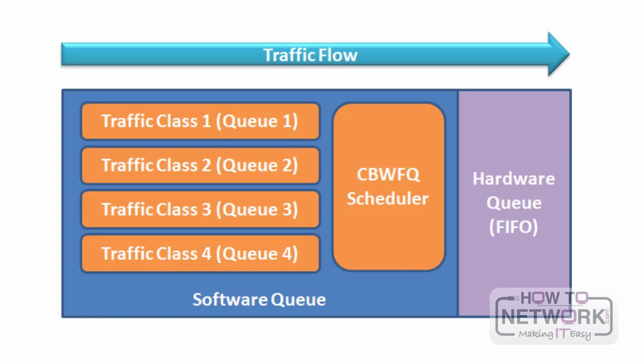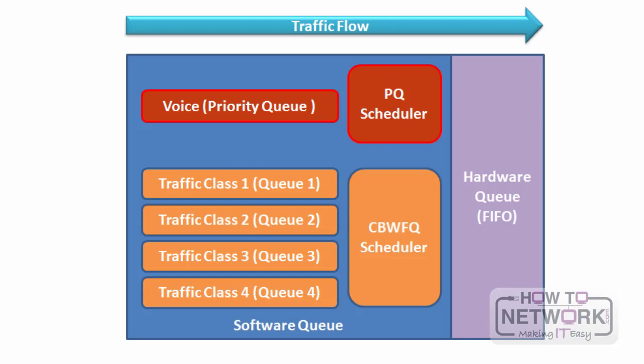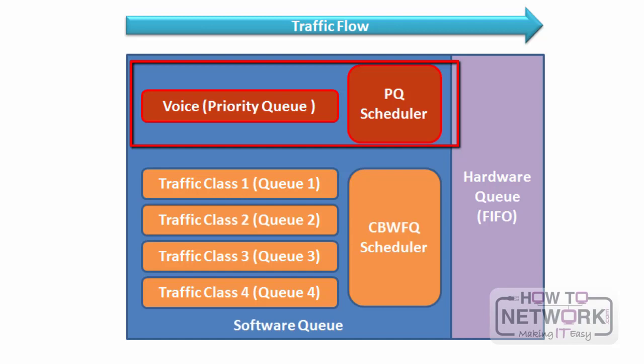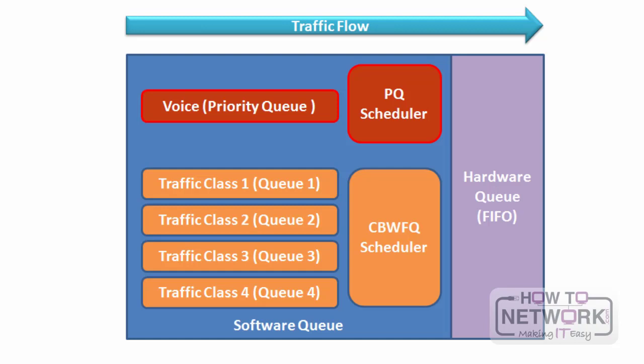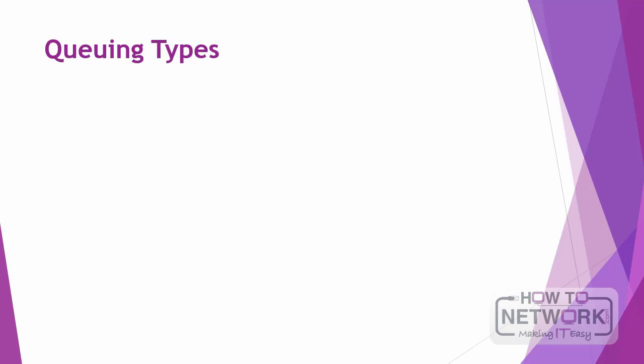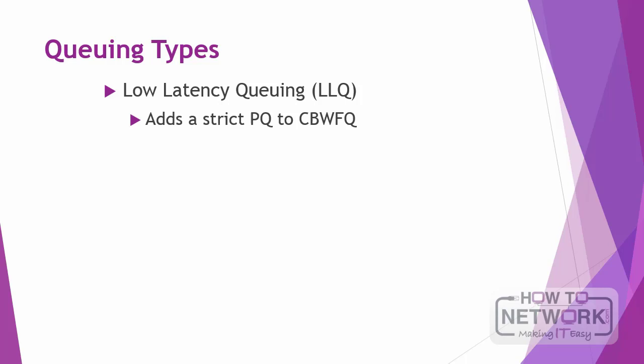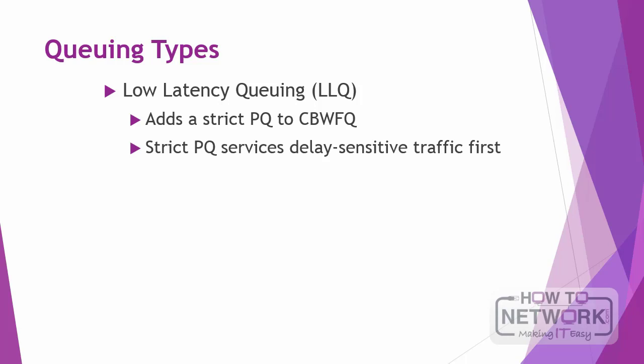Considering the inefficiency of CBWFQ when using VoIP, another technique was developed: low latency queuing. Adding a priority queue to CBWFQ will not lead to starvation because this queue is policed so that the bandwidth guaranteed for voice does not exceed a particular value. Since voice traffic gets its own priority treatment, the remaining traffic uses weighted fair queuing based on bandwidth reservation values. Unlike priority queuing, low latency queuing provides a maximum threshold on the priority queue, preventing lower priority traffic from being starved.